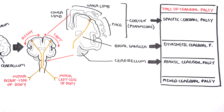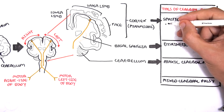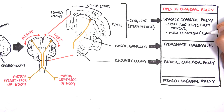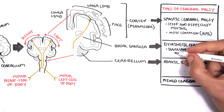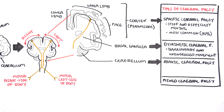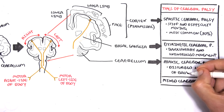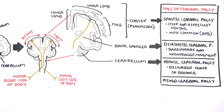Spastic cerebral palsy causes stiffness with difficulty moving the limbs, and is the most common type. Dyskinetic cerebral palsy affects the basal ganglia, producing involuntary and uncontrolled movement patterns — which makes sense if you think about Parkinson's disease, which also affects the basal ganglia. Ataxic cerebral palsy affects the cerebellum and causes disturbance in the sense of balance, which is why patients have a wide gait. Finally, there is mixed cerebral palsy.